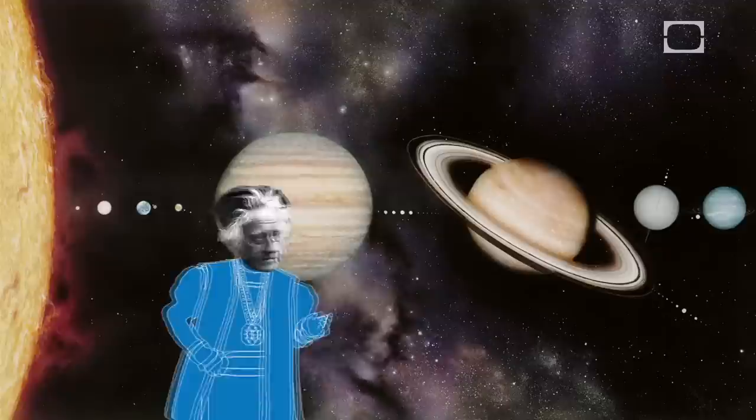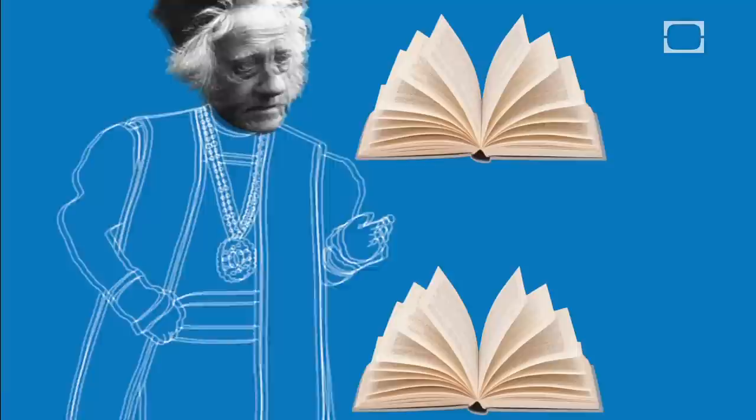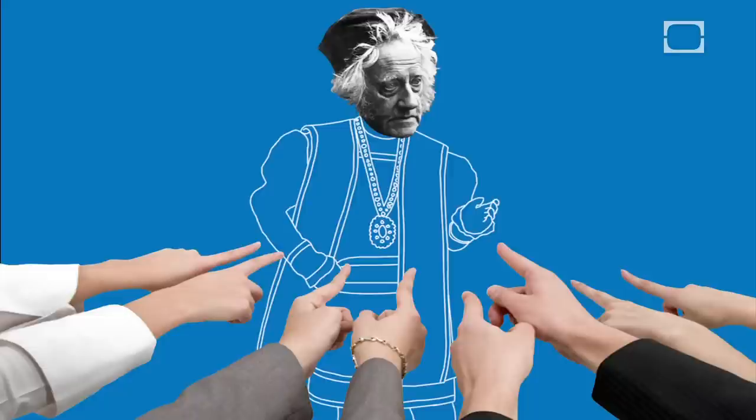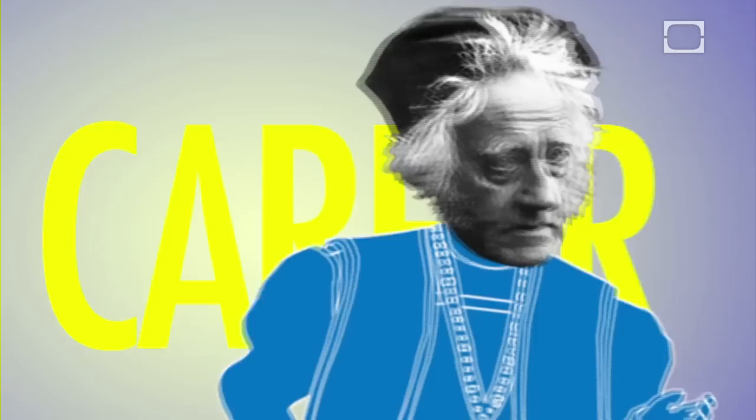He named moons throughout our solar system, studied colorblindness, and translated the Iliad. We can't blame him for being an overachiever. After all, his father discovered Uranus.